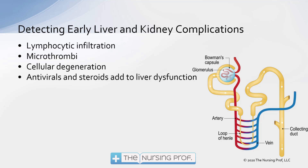Microthrombi start to occur because part of that inflammatory process is the development of clots. Think about getting a cut on your hand — we want it to clot so you don't bleed to death. That's part of the inflammatory process. Well, we don't need all these clots occurring in the kidney. But there's that same inflammatory process causing microthrombi — you can see the vasculature coming into the glomerulus, and we get some clots in there and we're not going to have good filtration. Cellular degeneration also occurs, and antivirals and steroids we give to help the patient actually cause more liver dysfunction, as they're filtered out of the liver, adding damage on top of the illness.